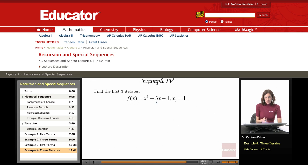x equals x squared plus 3x minus 4 and then x sub 0 or x naught is equal to 1. The first iterate will be f of x naught which equals f of 1.